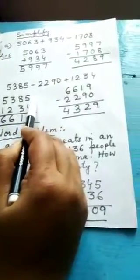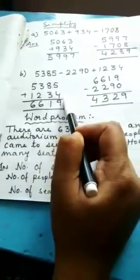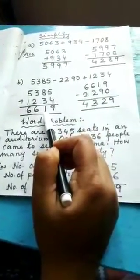First, you add this number with this number. Means add sign. See, 5,385 plus 1,234. You add these two numbers. Your answer will come 6,619.